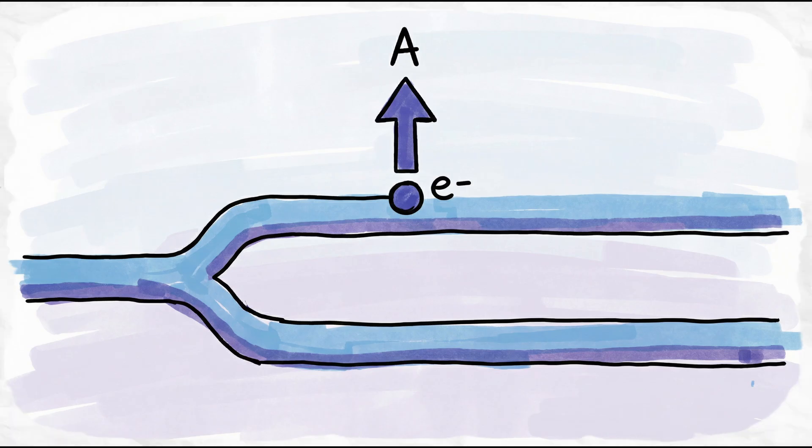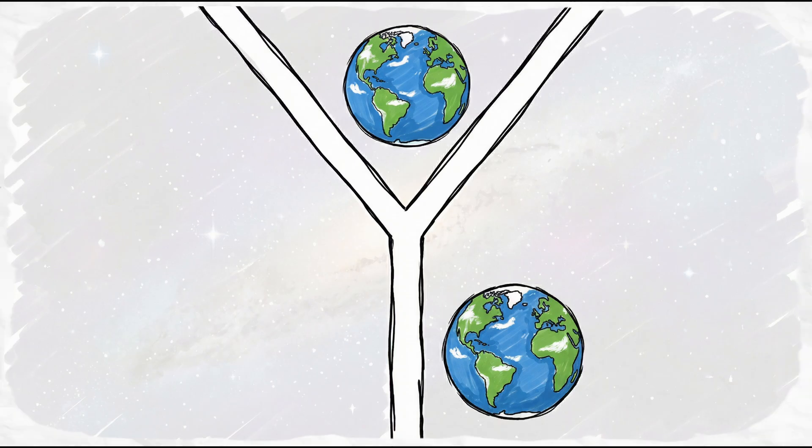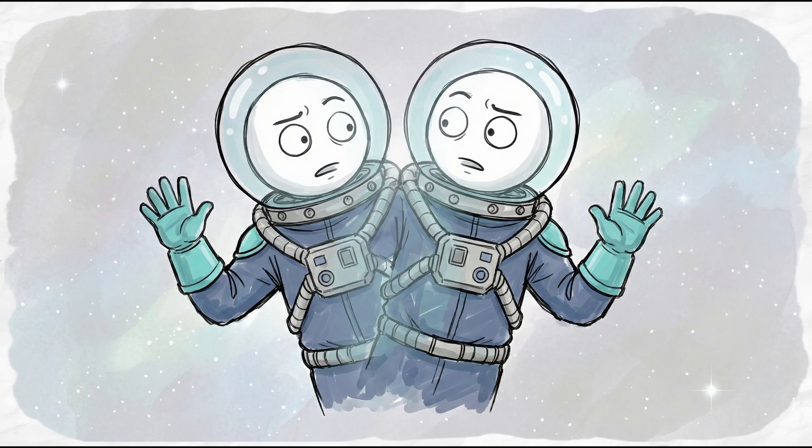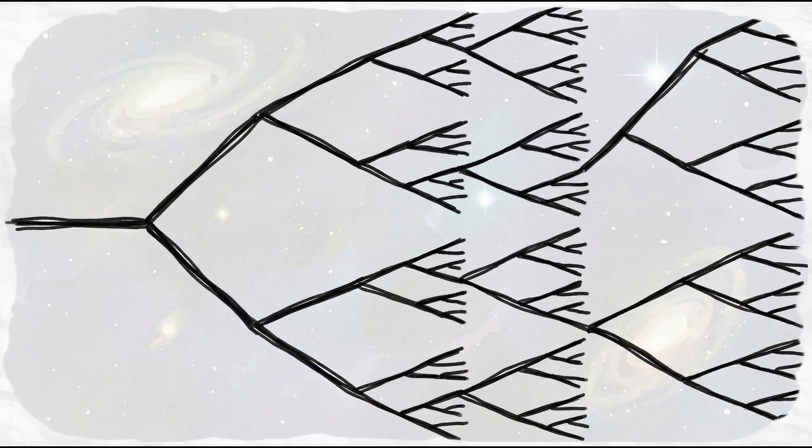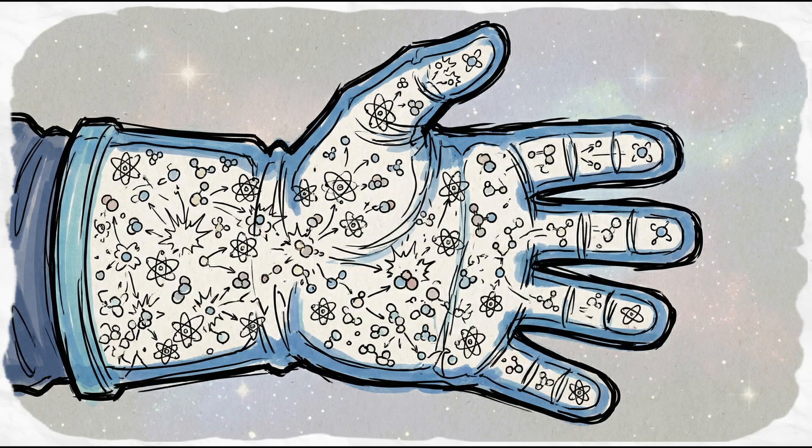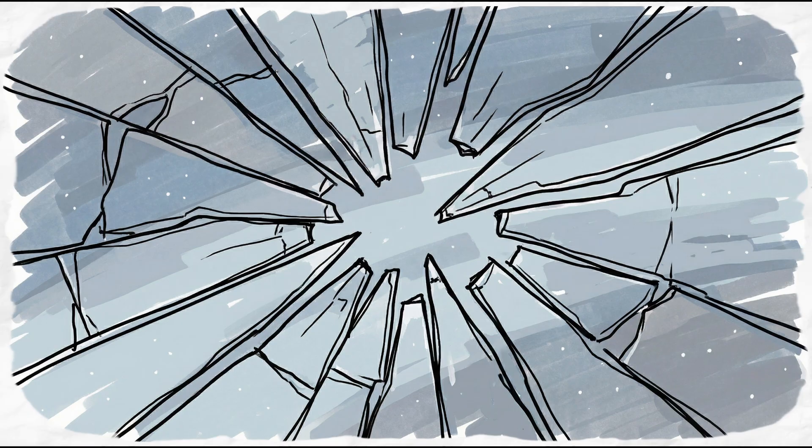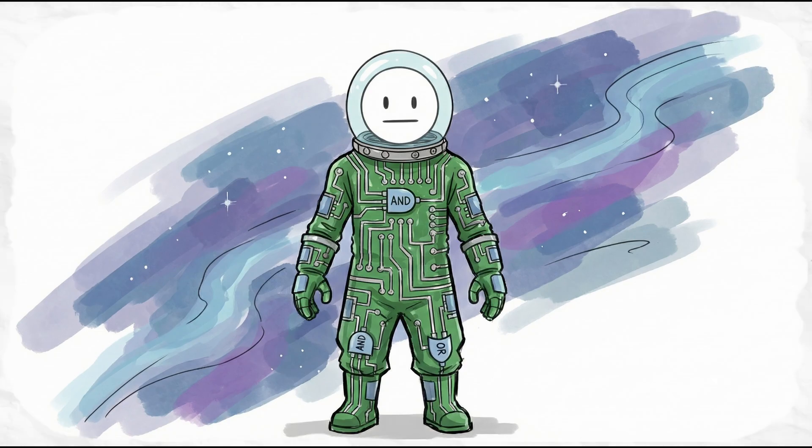In world A, the electron spins up. In world B, it spins down. Both versions of the universe are real. Both versions of you are real. This happens constantly, trillions of times a second. For every atom in your body, reality fractures. You're basically a walking logic gate.